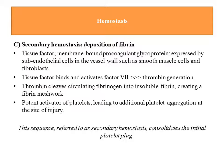Then there is secondary hemostasis — deposition of fibrin. The trauma exposes tissue factor, a membrane-bound procoagulant glycoprotein expressed by subendothelial cells in the vessel wall such as smooth muscle cells and fibroblasts. These subendothelial structures are exposed to blood after trauma. Tissue factor binds and activates factor 7 — this is the extrinsic pathway of coagulation. Factor 7 activation leads to thrombin generation.